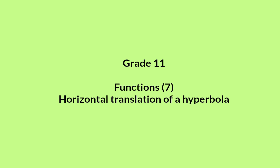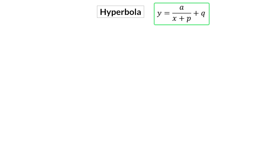In this video we're going to look at the horizontal translation of a hyperbola. We already know what the influence of the a and the q value is on a hyperbola. Let's have a look at what the p value does.